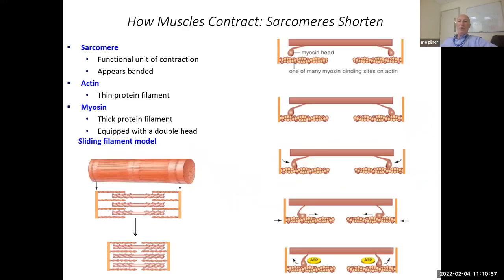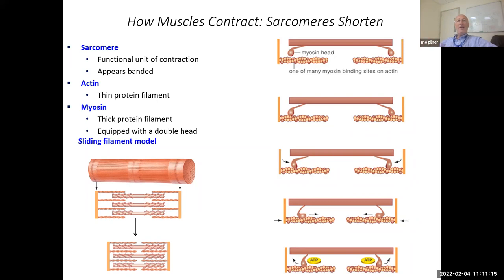So far we were talking about passive fluid. The fun is that this actin gel is actually active, and the simplest and dominant reason for its being active are molecular motors. The most ubiquitous of those is myosin.